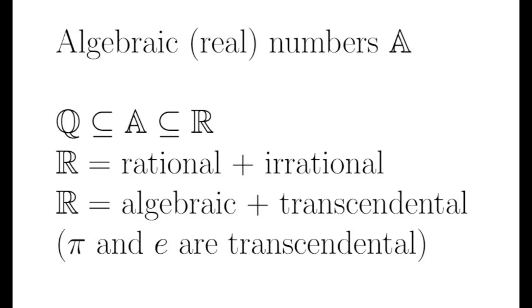Now, what if I wanted to adjoin not only root 2, but the real roots of all finite polynomial equations with integer coefficients? This also forms a field extension of Q that is a proper subfield of R. We call this the field of real algebraic numbers, which I will denote with an A.